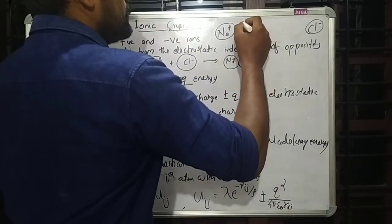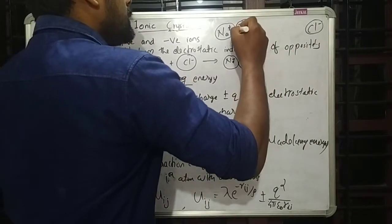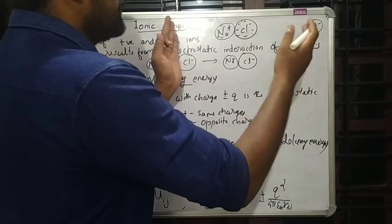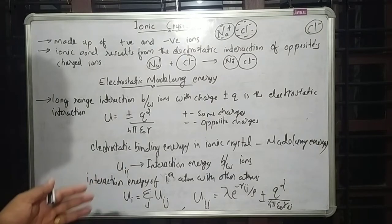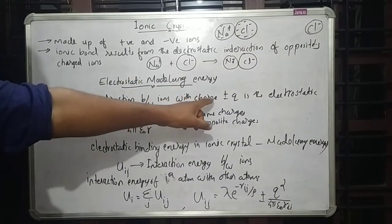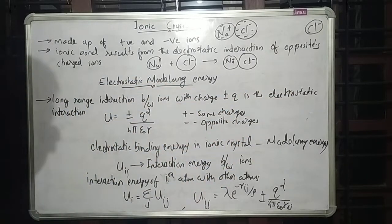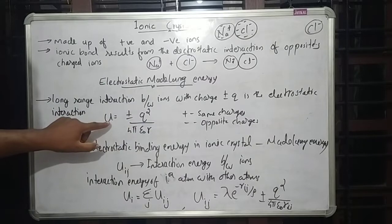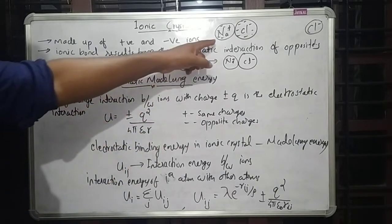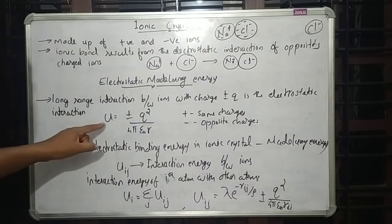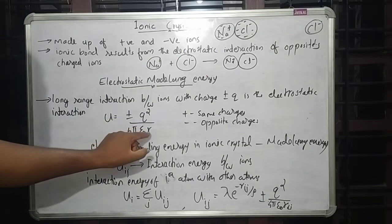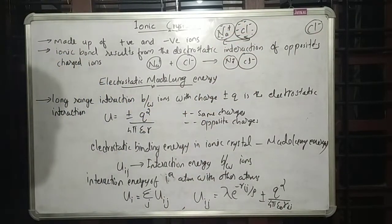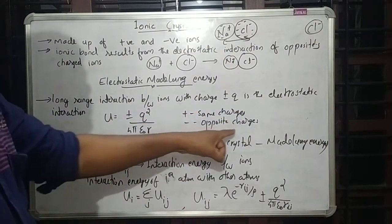If we bring these ions together, the Cl⁻ ion has many electrons, and there are many electrons on both sides. These electrons will repel when brought together, so there will be a repulsive force and repulsive energy. The long-range interaction between ions with charge ±Q is electrostatic: U = +Q²/4πε₀R for two positive ions (repulsive), and U = -Q²/4πε₀R for unlike charges (attractive), where R is the distance between the two ions.